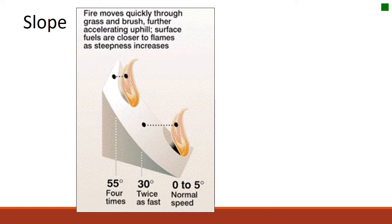Slope is another critical factor when thinking about prescribed fires and suppression strategies for wildland fires. On a relatively flat area, fire speed depends on wind speed and direction. But as slope is introduced, the distance between the flame front and the vegetation or fuel it's going to burn decreases. At 55 degrees of steepness, fire can move four times as fast as it would on a relatively flat area, because that distance between fuels and the flame front decreases as slope steepness increases.